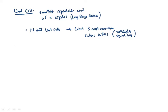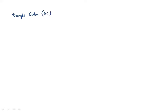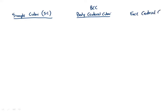The three different types of unit cells we're going to talk about are simple cubic — abbreviated SC — body-centered cubic, abbreviated BCC, and face-centered cubic, abbreviated FCC. The handout and the textbook have great pictures to follow along with.